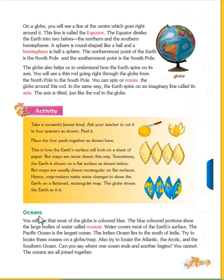Now let's come down to oceans. What do you mean by ocean? Can anyone tell me? The blue color on the globe shows large bodies of water called oceans. You can see that most of the globe is colored blue, which indicates water bodies. The blue colored portion — the large bodies of water — is known as an ocean. Water covers most of the earth.